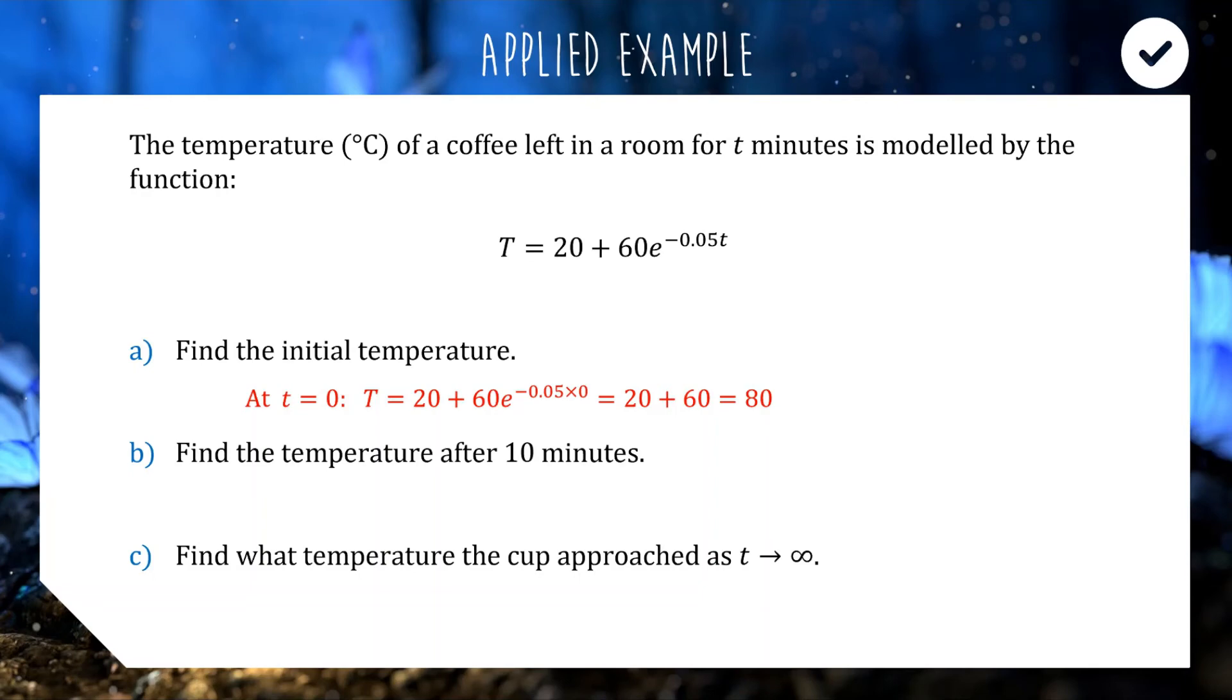Question B, find the temperature after 10 minutes. This is a calculation question. So, if you've got your Casio nearby, you want to blow the dust off it. We're going to take this function here. We're going to sub in 10 for the value of t. So, we're going to do this. Like I said, the E to the power button, if my calculator is similar to yours, it's above the LN button on the far right. So, see if you can put this calculation here into your calculator and see if you get an answer of about 56.4 degrees.